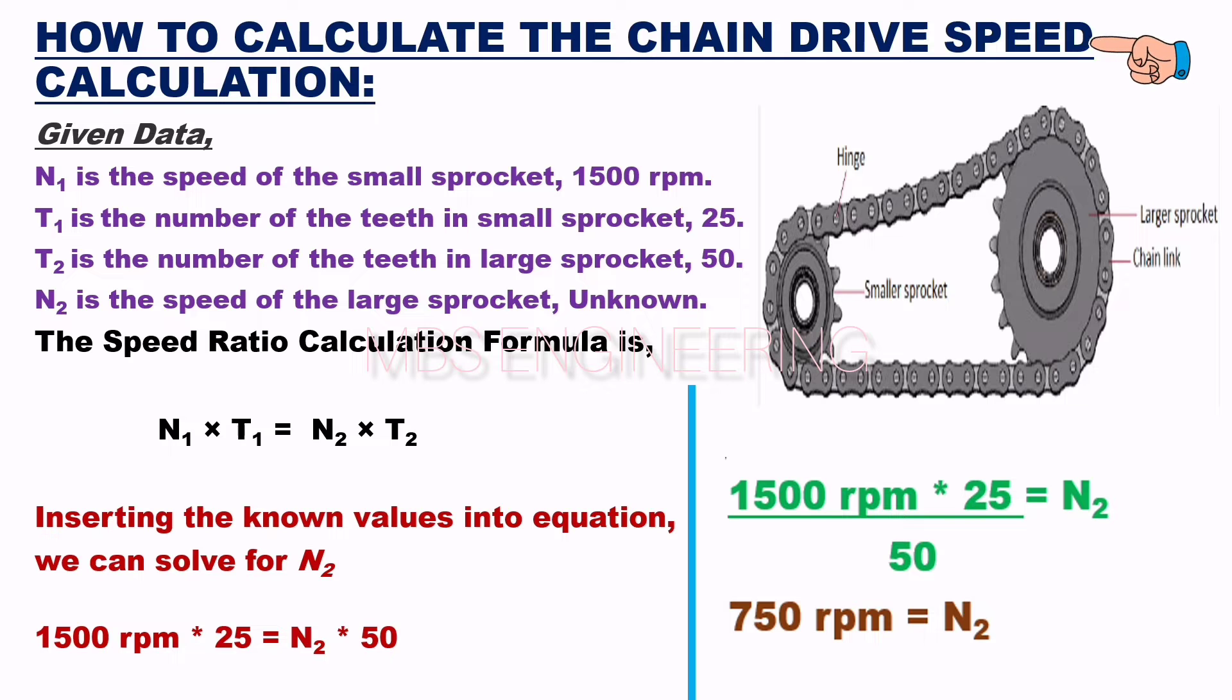Let's understand how to calculate the speed of a chain drive using the speed ratio formula. For this, we need to consider the following data as per the snaps. N1 is the speed of the small sprocket, 1500 revolutions per minute. T1 is the number of teeth in small sprocket, 25. T2 is the number of teeth in large sprocket, 50. N2 is the speed of the large sprocket, unknown.